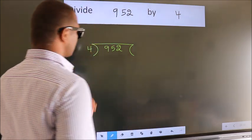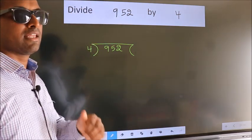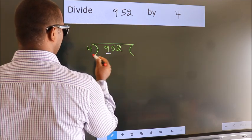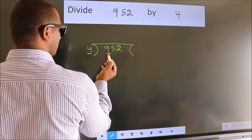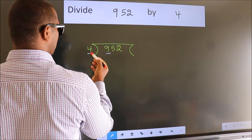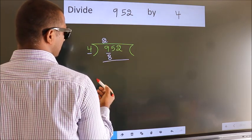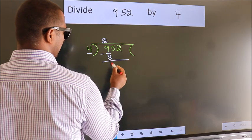This is your step 1. Next, here we have 9, here 4. A number close to 9 in 4 table is 4 2s 8. Now we should subtract. We get 1.